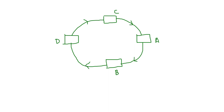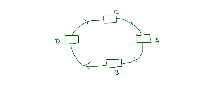There is also a different concept called dual ring topology. In dual ring topology, data can flow in both directions — clockwise and anti-clockwise. But dual ring topology is a different concept. In normal ring topology, data flows in one direction only.